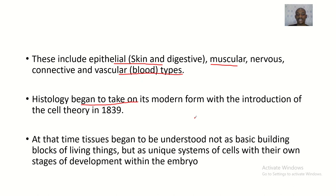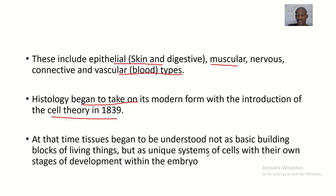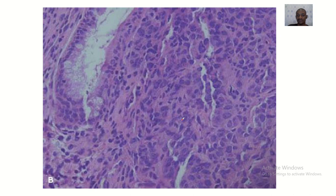Histology began to take on its modern form with the introduction of cell theory in 1839, through the works of scientists including Robert Hooke and others. At that time, tissues began to be understood not as basic building blocks of living things, but as unique systems of cells with their own stages of development within the embryo, shedding more light on the development of different organisms.